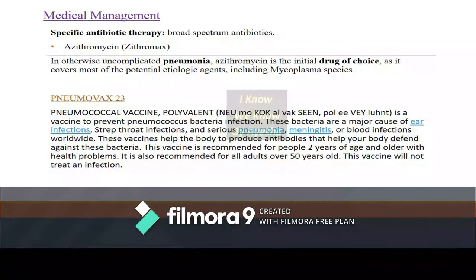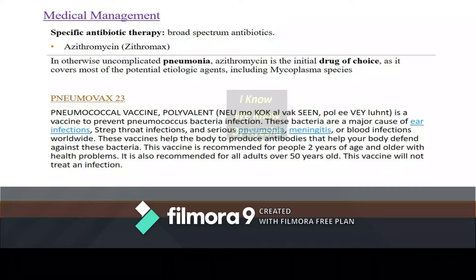For medical management of pneumonia, the most common drug of choice is azithromycin, a broad-spectrum antibiotic that helps in treating bacterial pneumonias. Pneumovax vaccine is given especially to those 2 years of age or older with health problems, and is recommended for all adults above 50 years. This vaccine helps prevent future infections but does not treat existing infections.